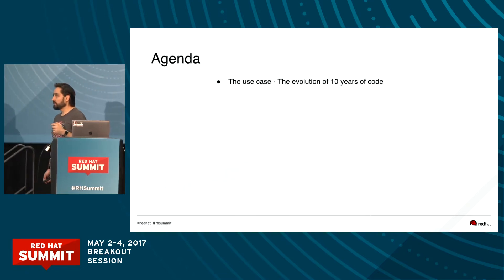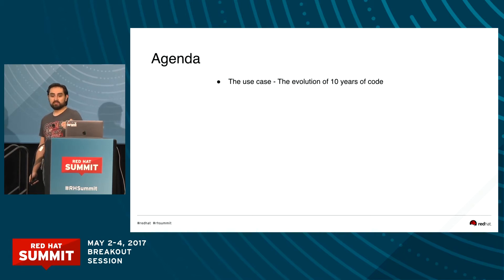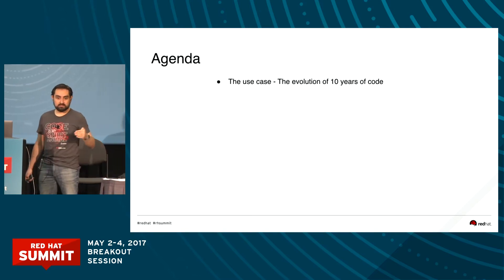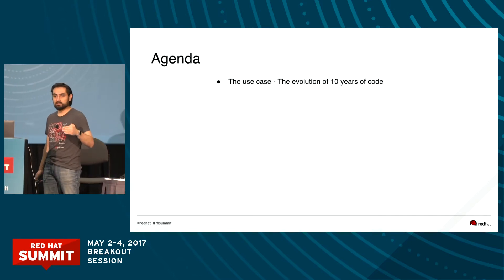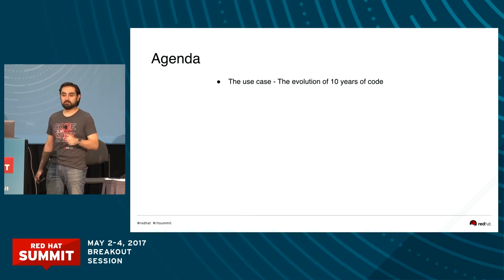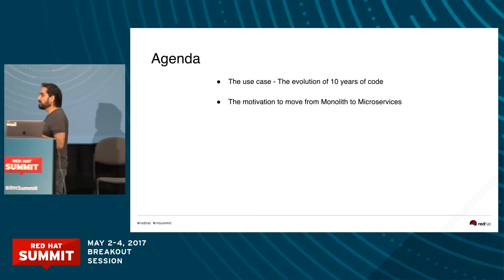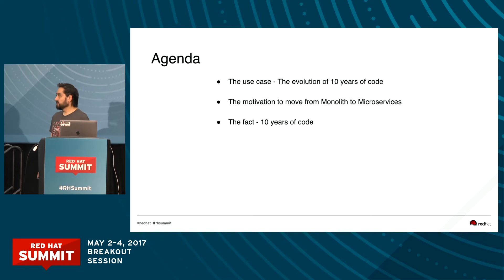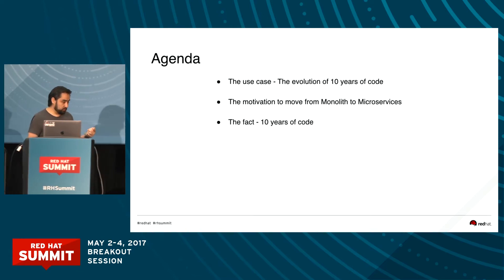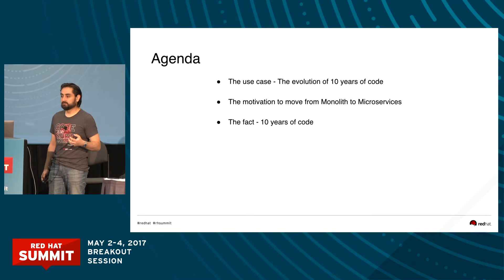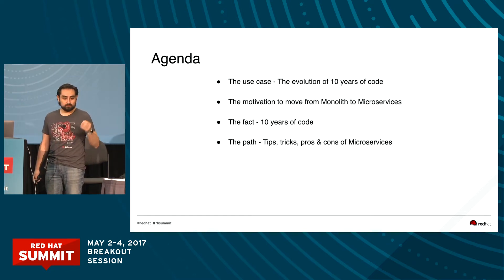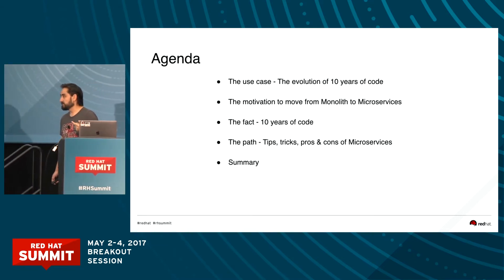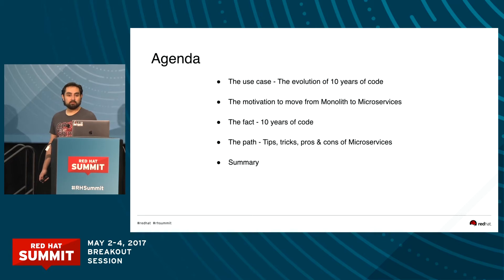Today I'm going to explain first how we handled this code for 10 years — it's a product from a UK company installed in more than 15 banks in Latin America. I'll explain the motivation to move from monolithic to microservices, show how 10 years of code looks, present a path for moving that code to microservices, and then summarize.